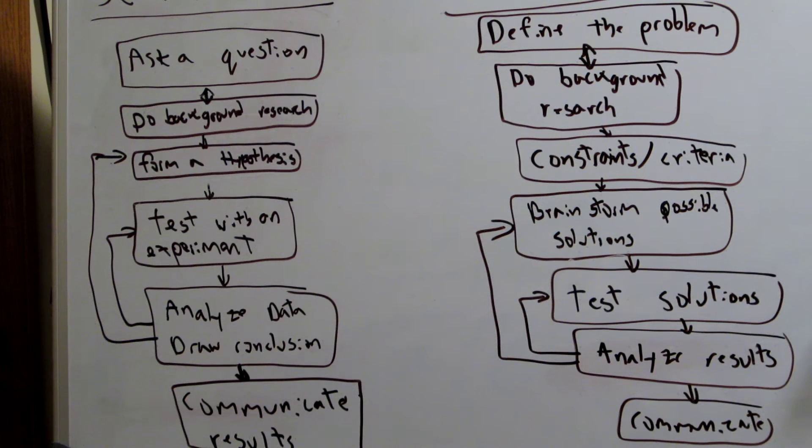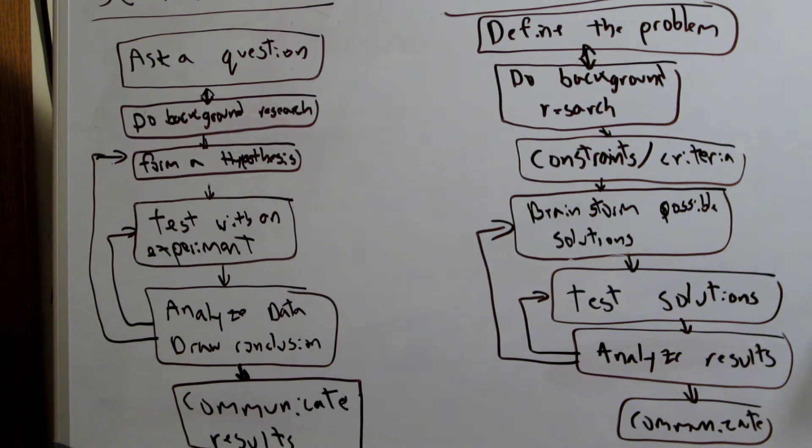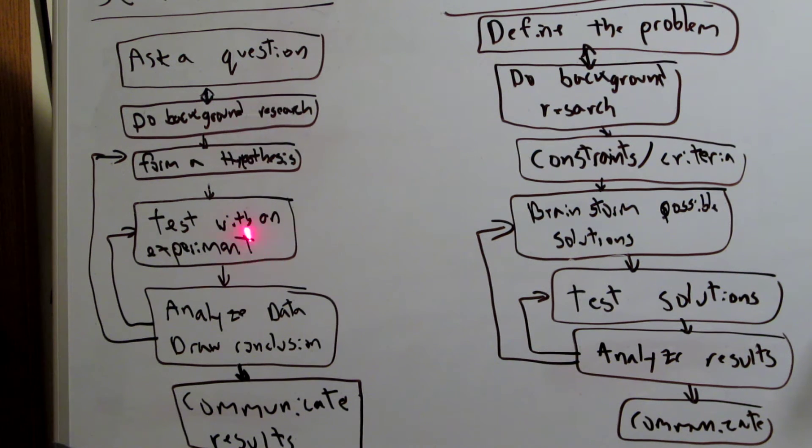The first thing you do in the scientific method is you're going to ask a question. It's a simple base layer before you do anything else. After that you're going to do some background research into your question, just so you have a firm foundation before you start anything else in the method.